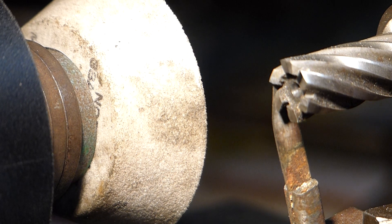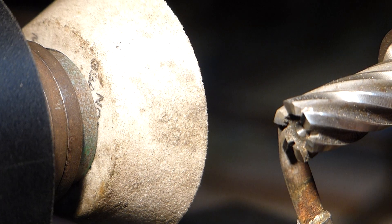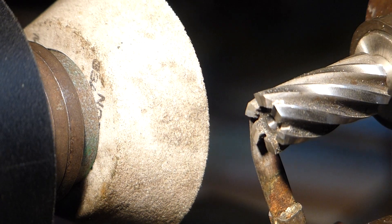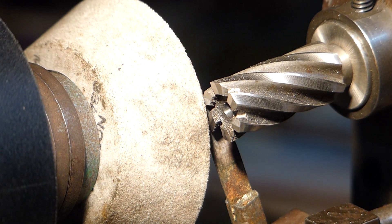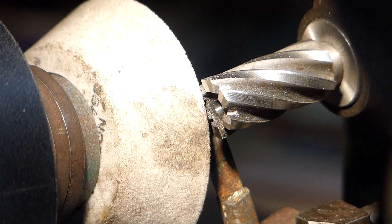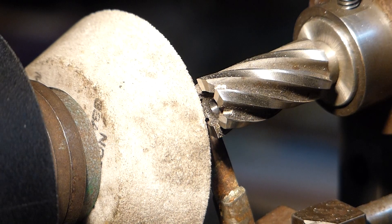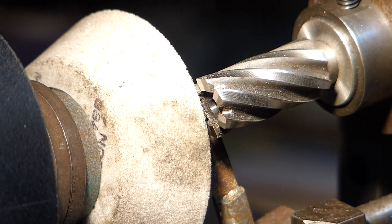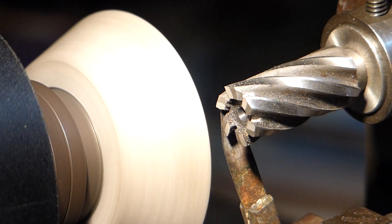Now we're going to tilt the work head to 12 degrees for the secondary clearance on the teeth. You could probably use 10 degrees but I've always used around about 12. Also I shall adjust the position of the wheel so it doesn't strike the tooth above and make sure that my stops are set. I'm just going to go around now and put the 12 degree clearance on.